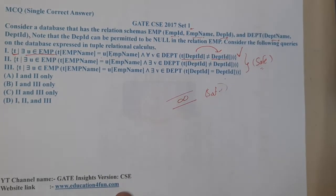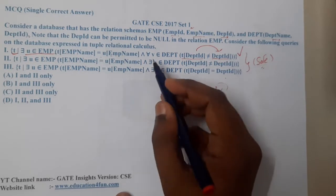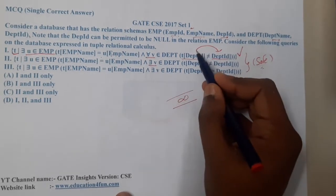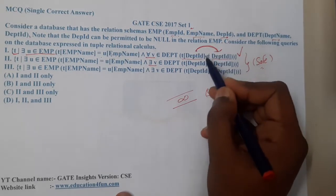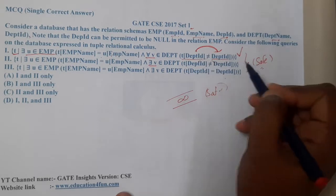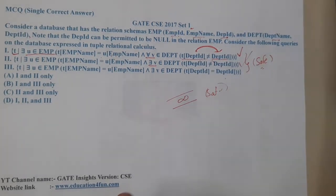Moving on to the second query, it is exactly the same except the first uses 'for all' and the second uses 'there exists' (for some). So the first prints employees who do not belong to any department, while the second prints employees who do not belong to some department. This statement is also valid and safe.